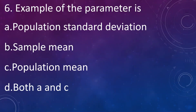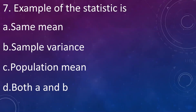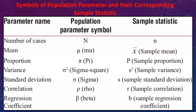An example of a parameter is: A: population standard deviation, B: sample mean, C: population mean, D: both A and C. Answer is D: both A and C — population standard deviation and population mean. An example of a statistic is: sample mean and sample variance (both A and B). Sample mean and sample variance are examples of statistics, that is estimates of the sample.